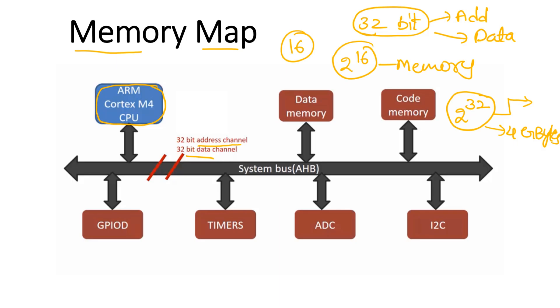After this example, you can get a clear idea. This is the ARM Cortex-M4 processor, and some peripherals are connected to it: GPIO, Timers, ADC, I2C, code memory, and data memory.